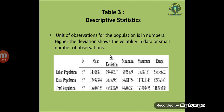Table Three presents the descriptive statistics. The unit of observation for the population is in numbers. A higher standard deviation shows the level of volatility in the data, or small number of observations. We can see the urban population, rural population, and total population. Urban population over 57 observations has a mean of 34,308,882 and a standard deviation of 19,424,207.